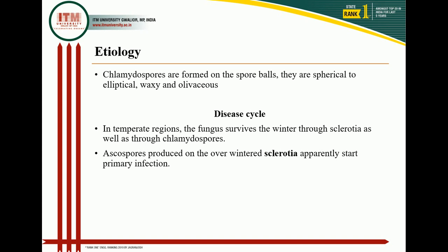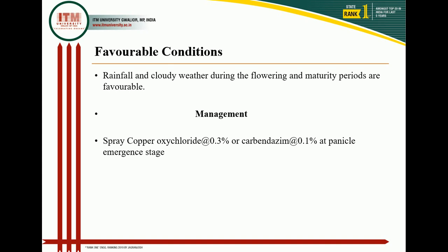Chlamydospores are important in secondary infection, which is a major part of the disease cycle. Infection usually occurs at the booting stage of the rice plant. Chlamydospores do not free themselves from the spore wall easily because of the presence of sticky material. Rainfall and cloudy weather during the tillering and maturity period are favorable for development of the disease.